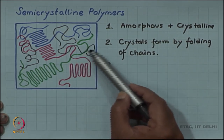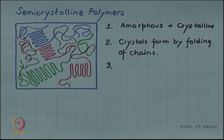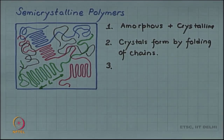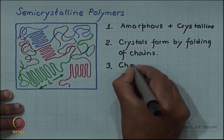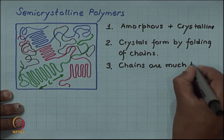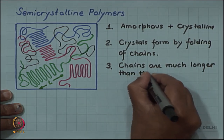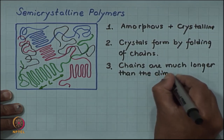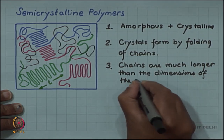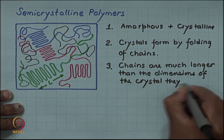For example, the green chain is much much longer than the length of the green crystal, which is much smaller. So the chains are much longer than the dimensions of the crystal they belong to.